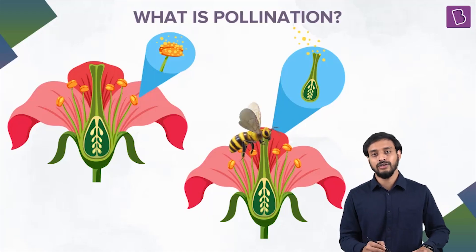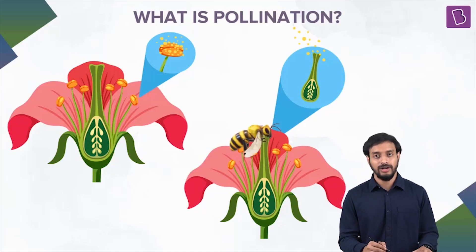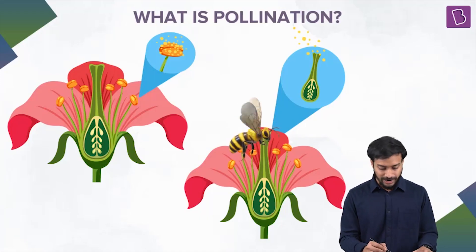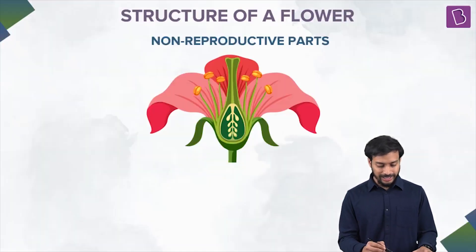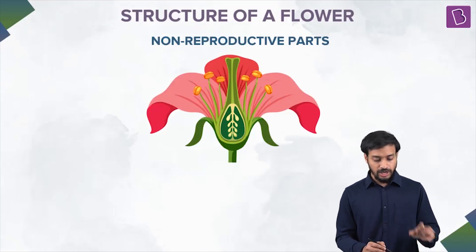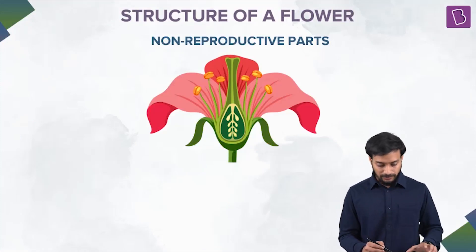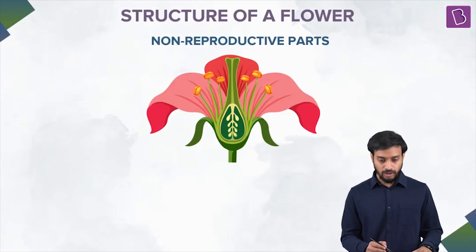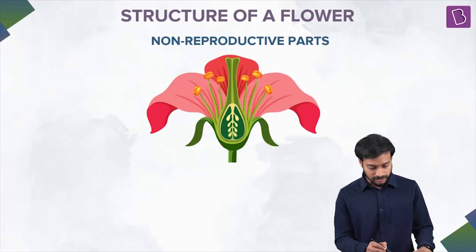The stigma is the female part. So this is about pollination, and this is essential for sexual reproduction in flowering plants. Let's quickly see the structures — the non-reproductive parts.